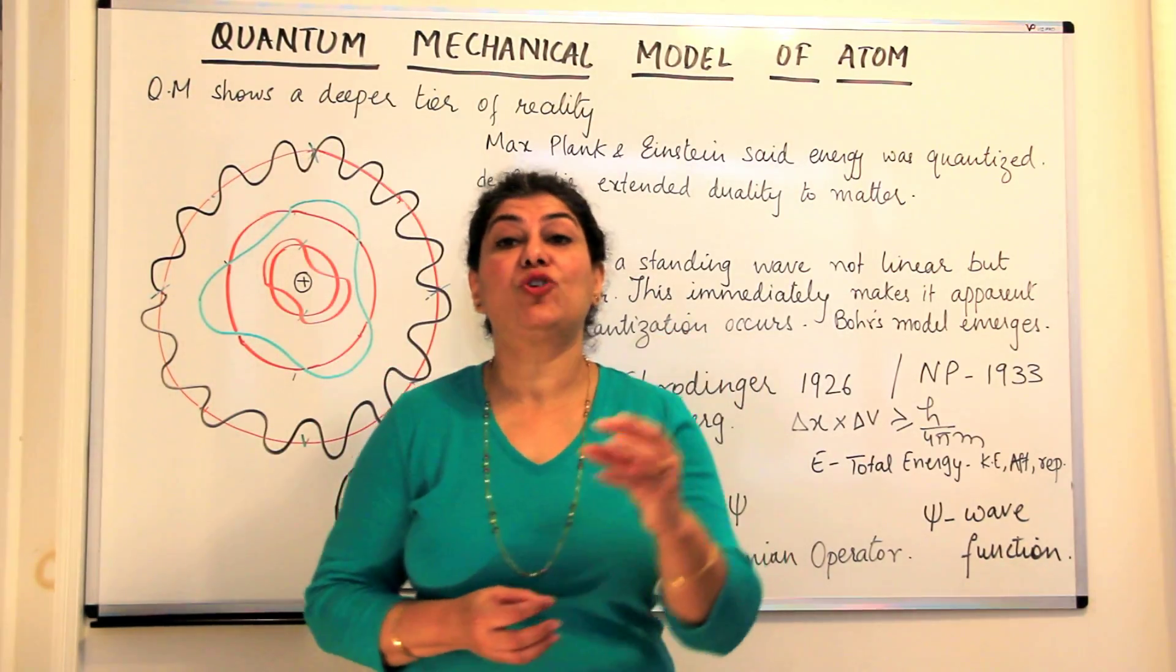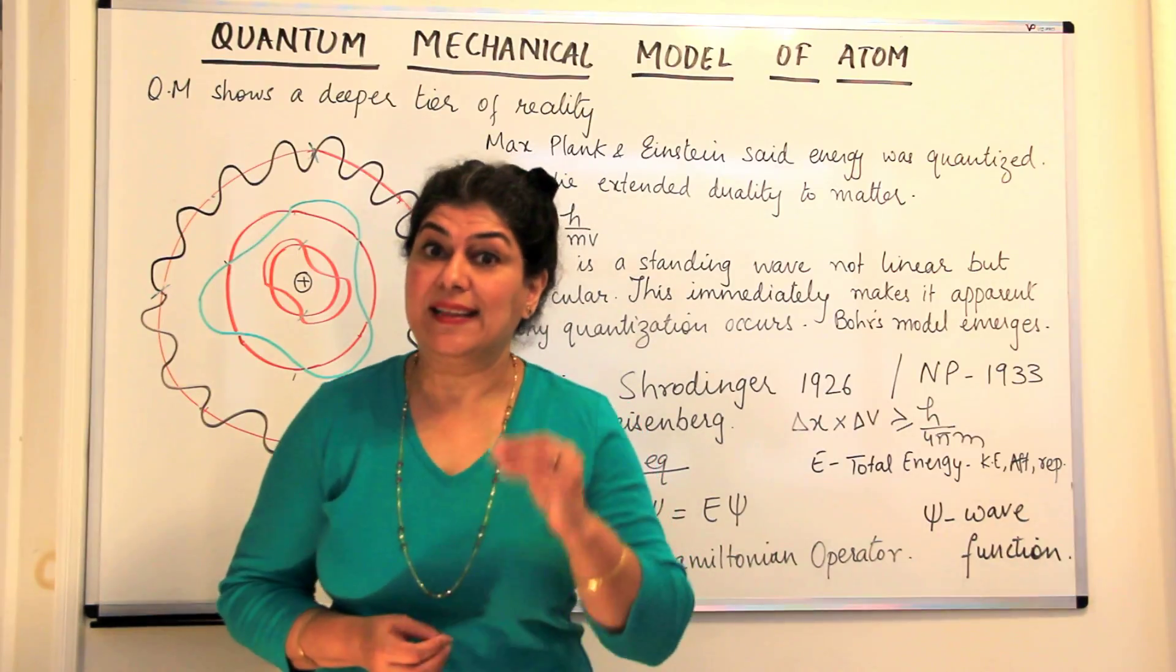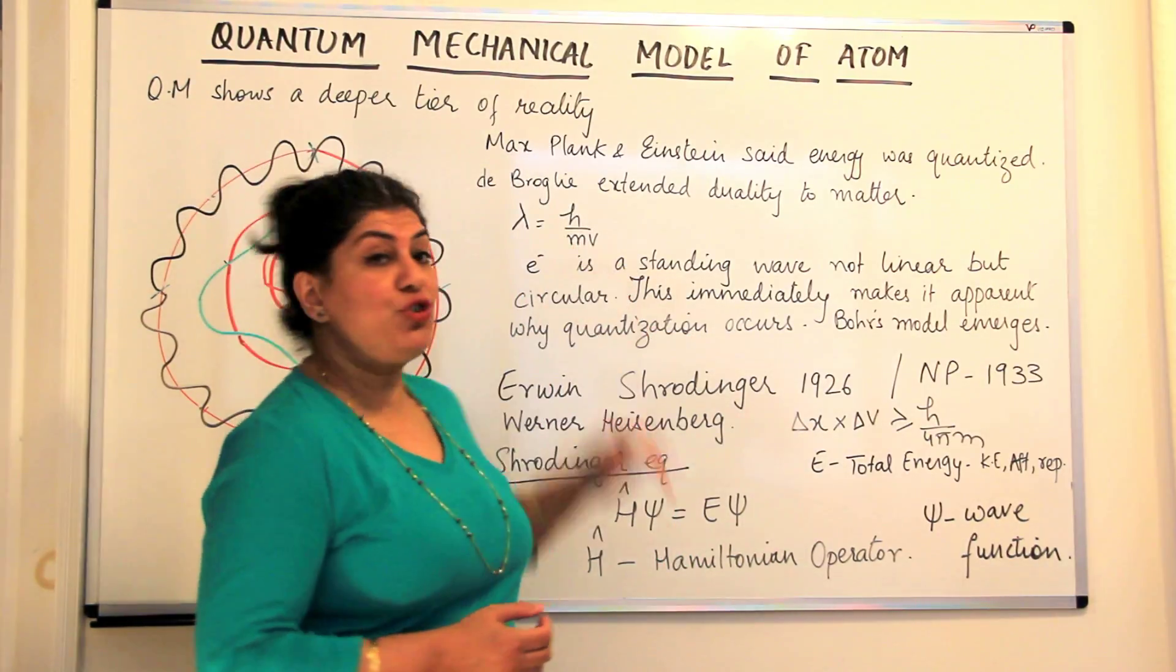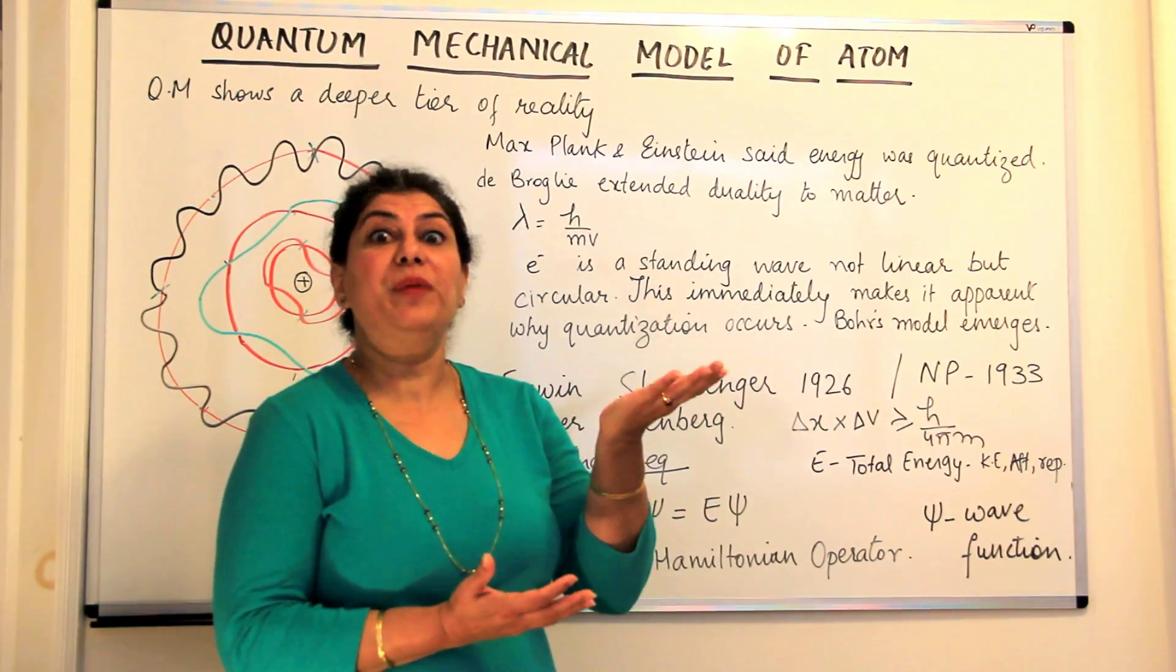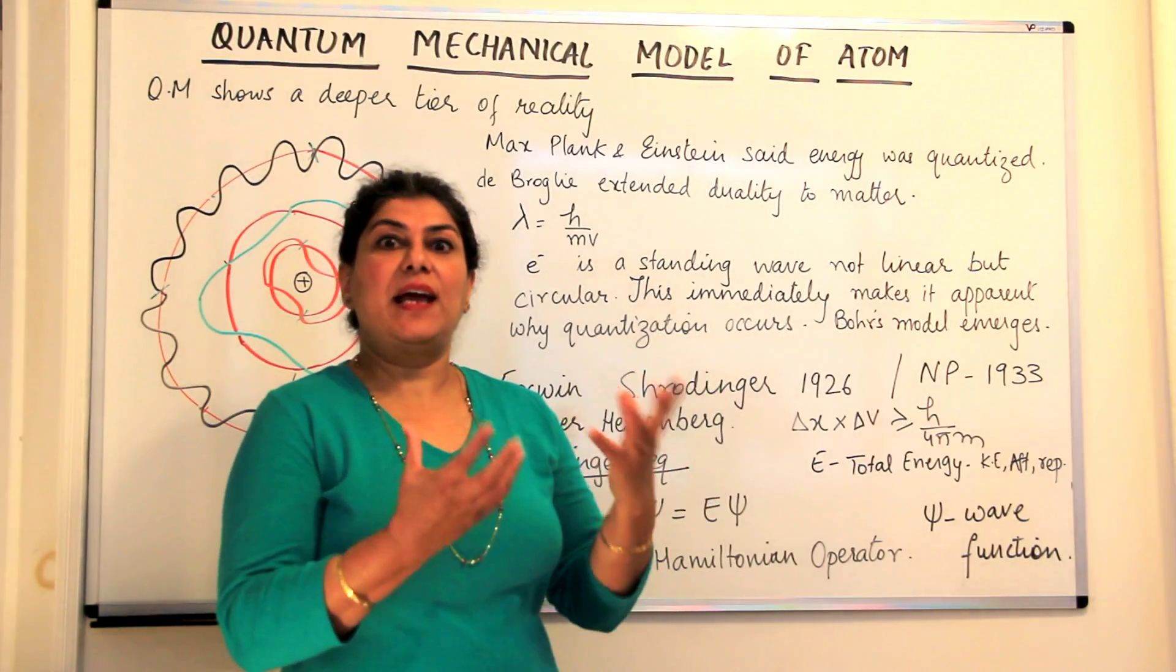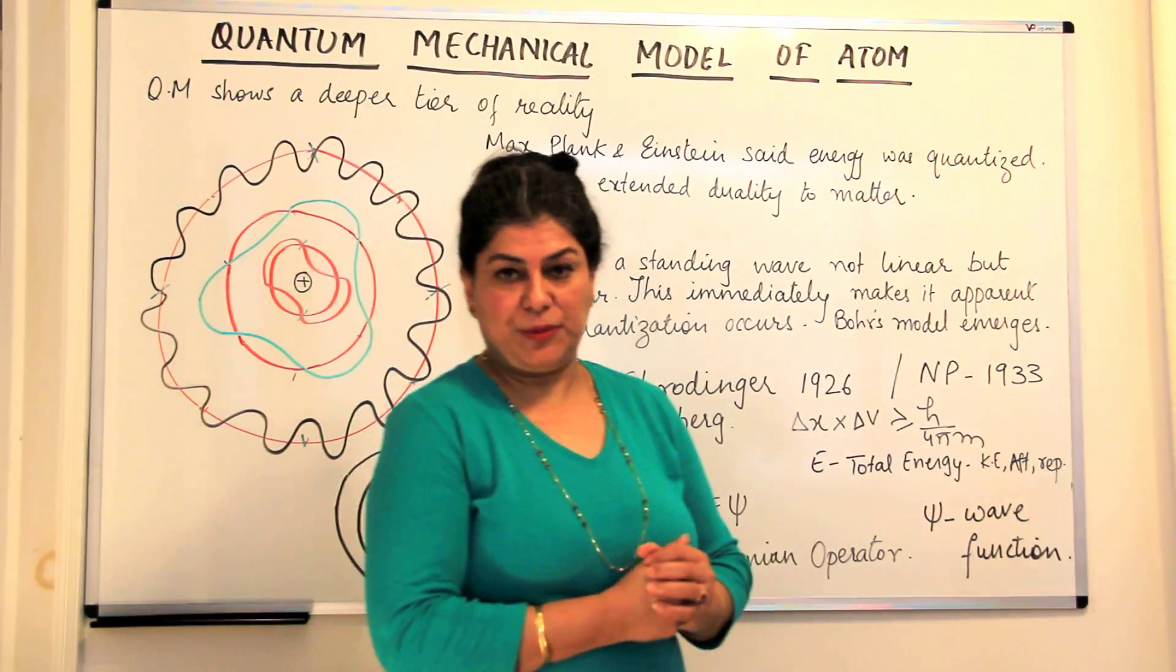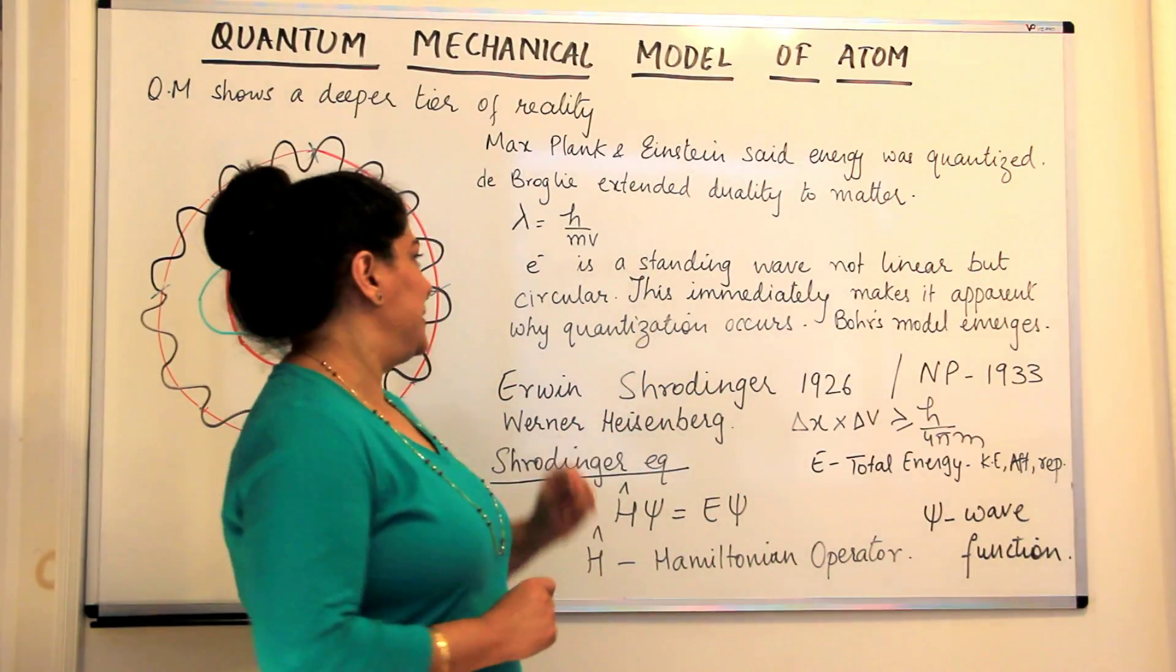But if you come to subatomic particles like electrons, then the mass is so small that its wave nature becomes very prominent and therefore it can be observed although with very strong instruments.